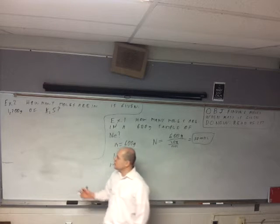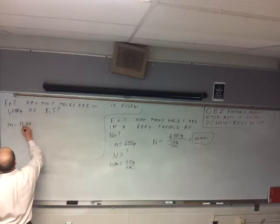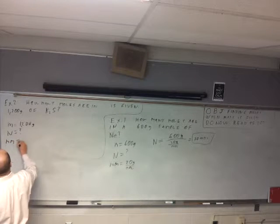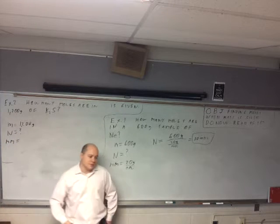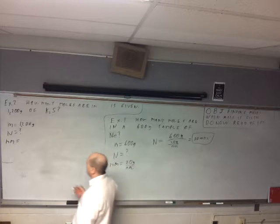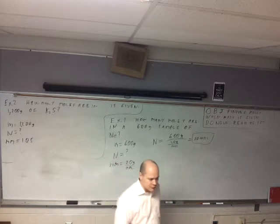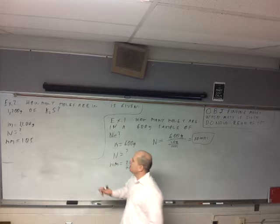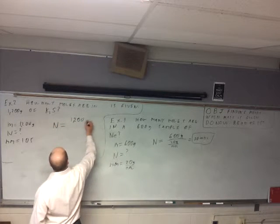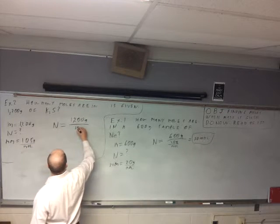All right. So, we know what our mass is of our sample, that's 1,200, so M is 1,200 grams. N, we don't know, that was our question mark. We need to know the molar mass of potassium sulfide, which is 110.5. I'm going to trust you, not double check. All right. So, we got N equals 1,200 divided by, it's just grams per mole, right? 110.5 grams per mole.